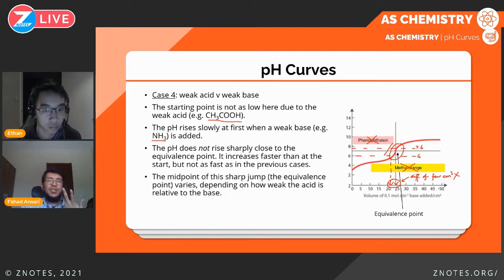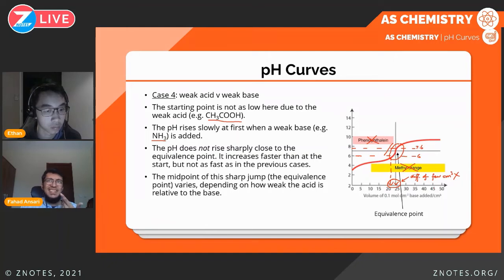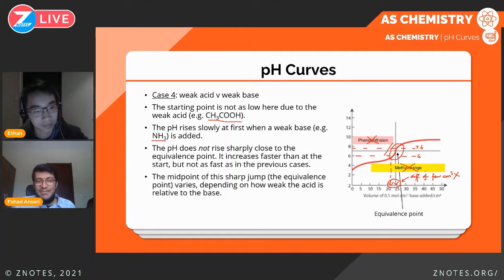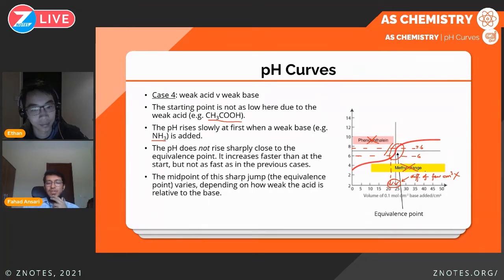You would have to use a pH meter for a weak acid–weak base titration, and normally pH meters are not easily available in school labs.